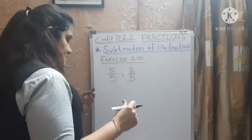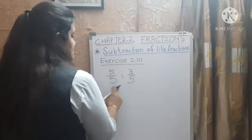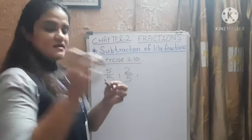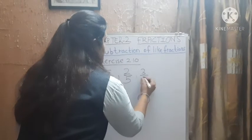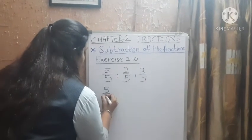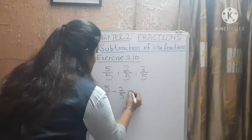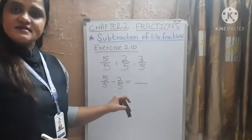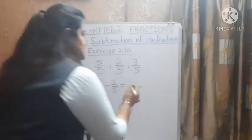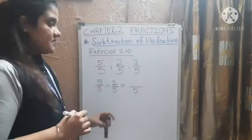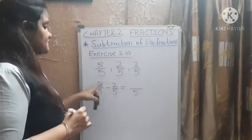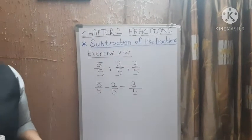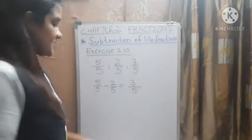That means 5 by 5 is there, and 2 I have given to your friend, so how many are left? 3. So that means 5 by 5 minus 2 by 5. In like fractions, when the denominator is the same, you write the same denominator below. Subtract the numerators: 5 minus 2 equals 3. So this is called the like fraction, as we did for addition — now this is for subtraction.